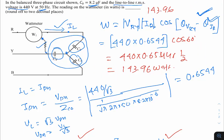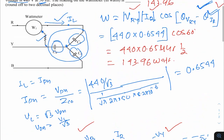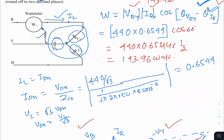To solve such questions, a good understanding of the phasor diagram and the wattmeter equation is essential. V_RY was directly given; I_R was obtained using star-connected load relations (I_line = I_phase, V_phase = V_line/√3); and the phasor diagram gave the 60° angle. Substituting cos(60°) and simplifying gives 143.96 W as the final answer.